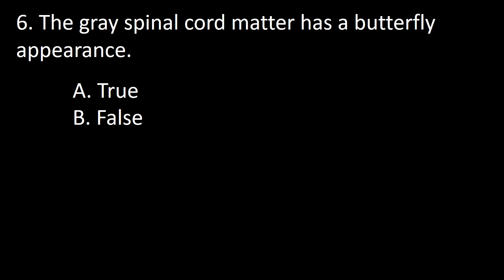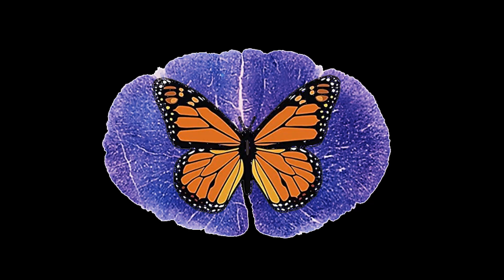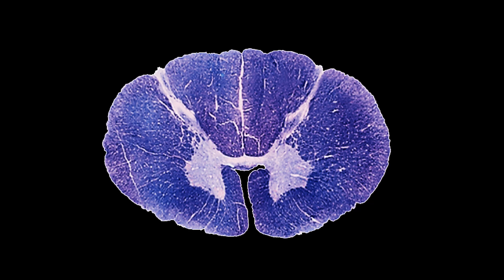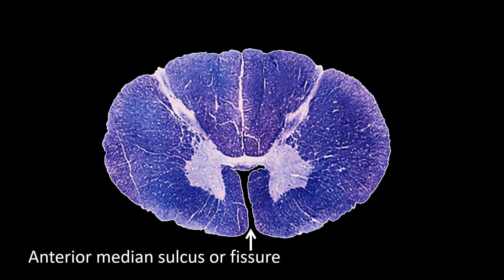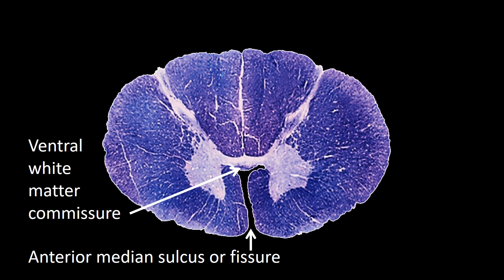Next question: the gray spinal cord matter has a butterfly appearance — true or false? This specimen corresponds to a transverse cut of a cervical spine segment. The gray matter, with a little imagination, resembles a butterfly. We can label the following landmarks: the anterior median sulcus, the ventral white commissure — here looking blue because this specimen was prepared with a blue myelin stain, making the myelin look darker than the gray matter — and the anterolateral sulcus, the site of exit of the ventral roots.